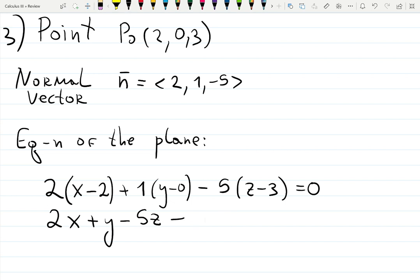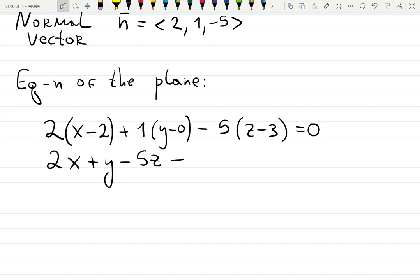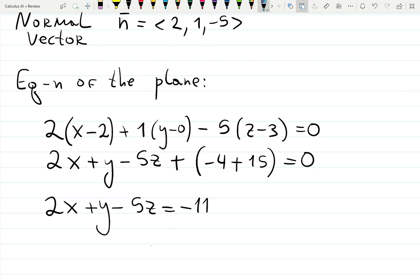Or sometimes you do it minus d equals to 0. So what is that d? d is this collection of constants. 2 minus 2, so it's going to be -4 plus 0, and then -5 and -3 gives you +15 equals to 0. So 2x + y - 5z, and -4+15 is 11, so it's -11. Both answers are correct. Now it depends on how you are asked to input or show your final answer.